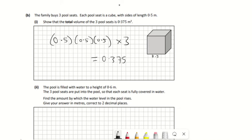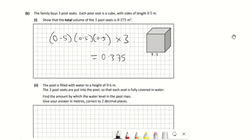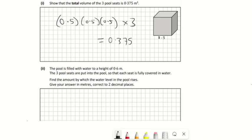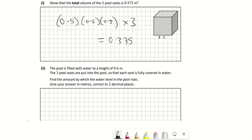Remember, volume of a cube or cuboid is just length times width times height, so 0.5 times itself twice. So the pool is filled with water to a height of 0.6. The three pool seats are put into the pool so that each seat is fully covered in water. Find the amount by which the water level in the pool rises.